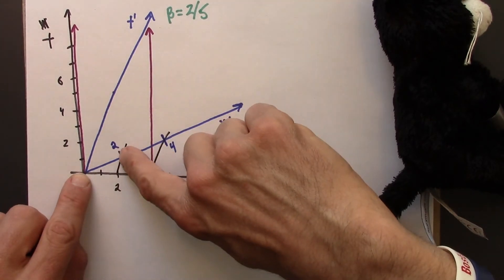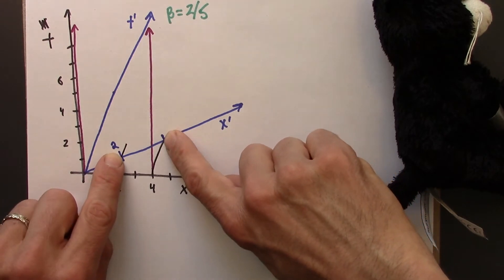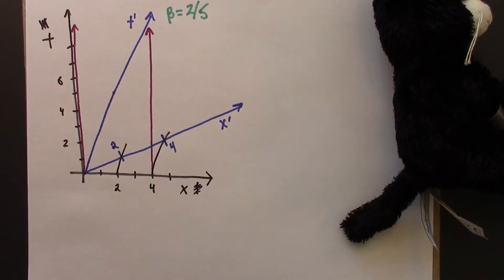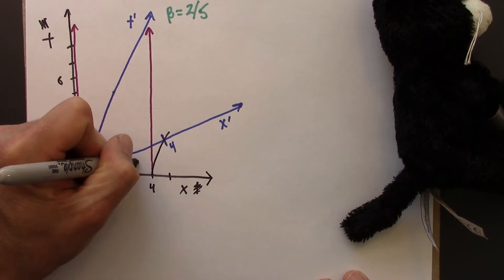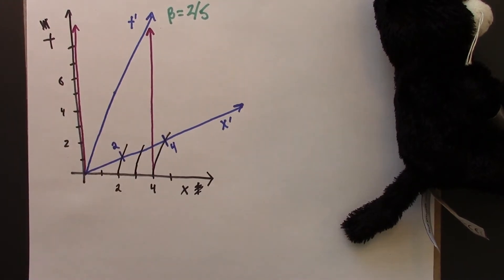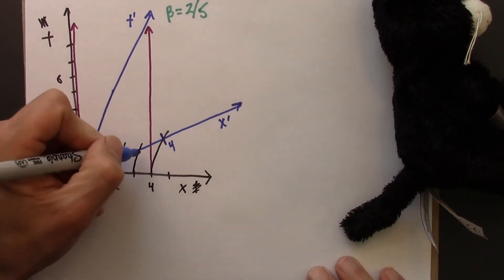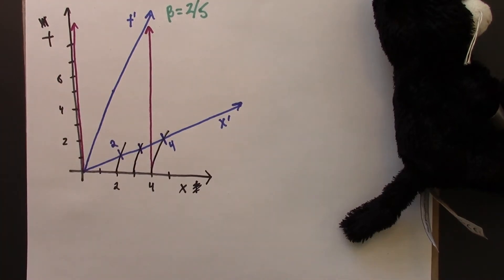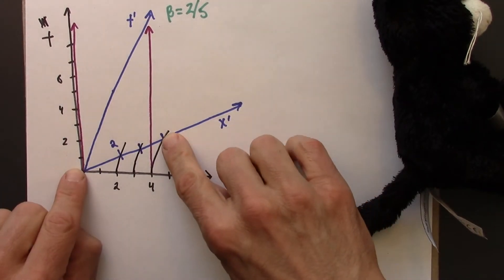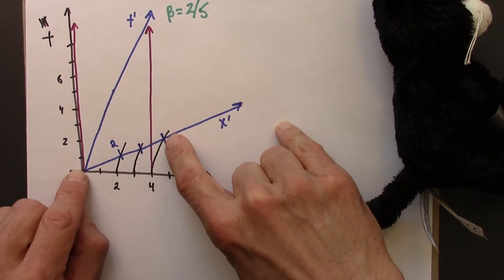So, this would be 2. This would be 4. And so we see, I guess I could draw one more. That would be 3. So we see that for Beowulf, the length of the rod is less than 4. It's definitely less than 4.